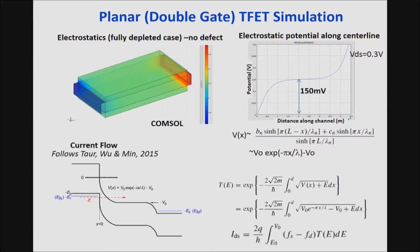To proceed with the current calculation, one can use relatively simple modeling using the WKB approximation to determine the passage of electrons through tunnel barriers of this sort. That is also relatively straightforward to do with either MATLAB or quasi-analytical formulations.